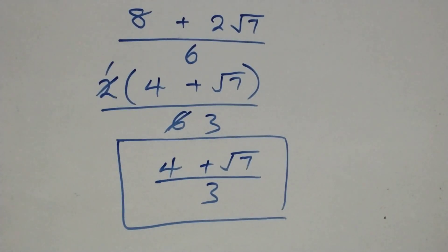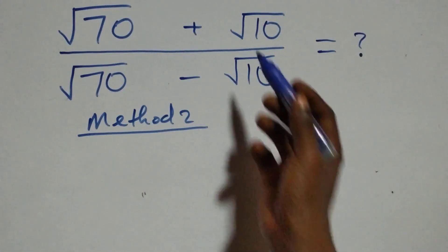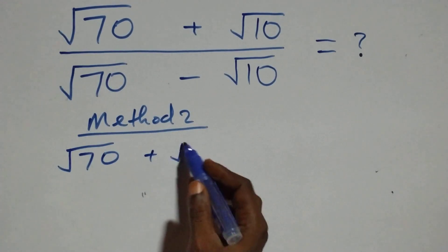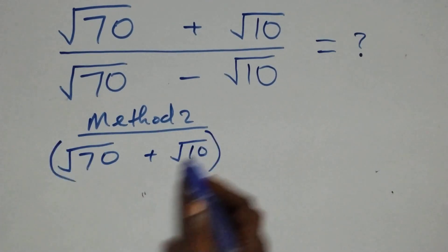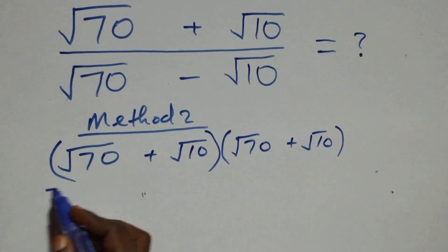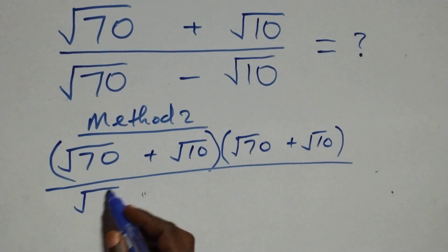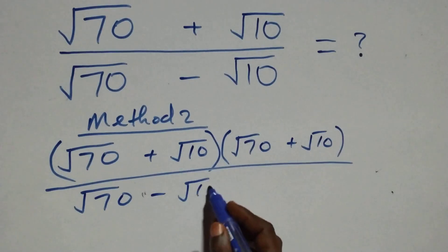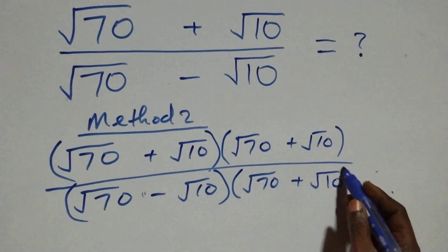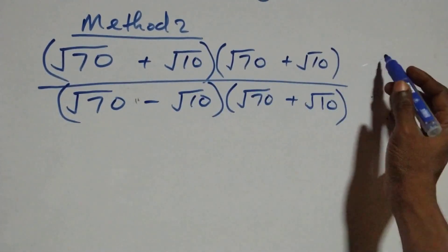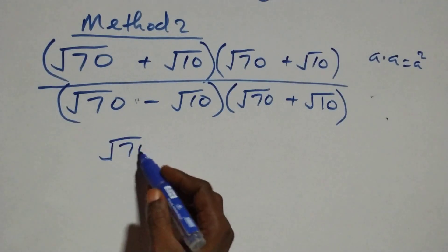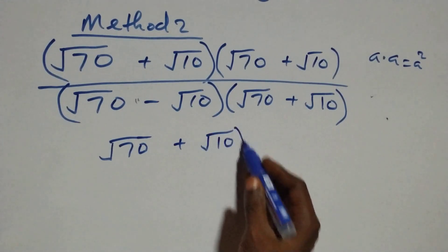Now let's use the second method. We multiply the numerator and denominator by the conjugate of the denominator. We have root seven plus root ten multiplied by the conjugate of root seven plus root ten, divided by root seven minus root ten multiplied by the conjugate of root seven plus root ten. The numerator becomes root seven plus root ten, all squared.